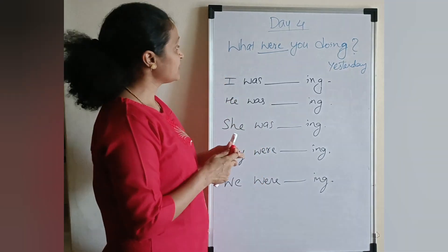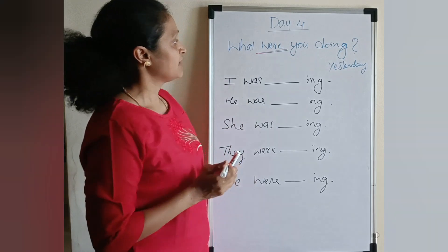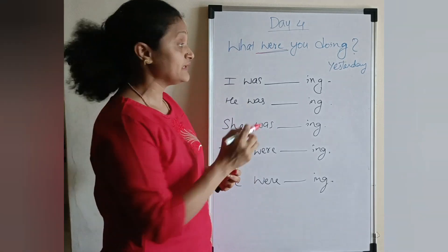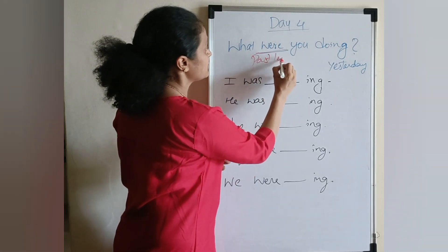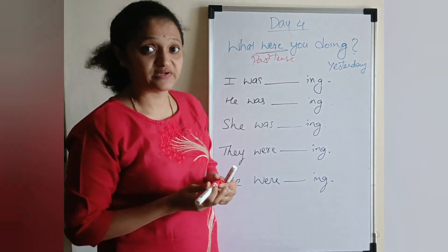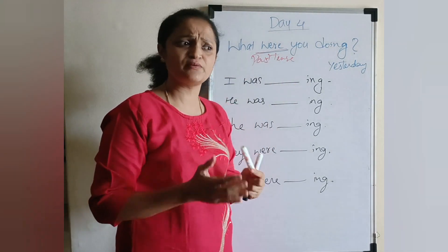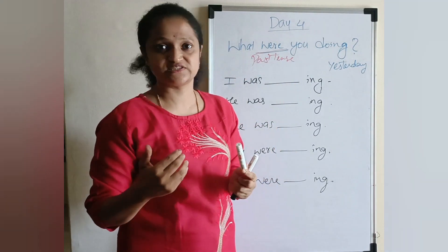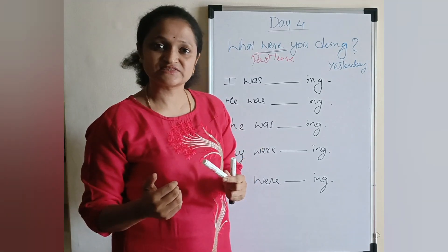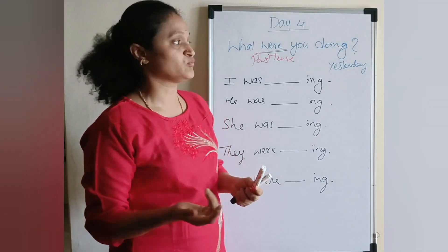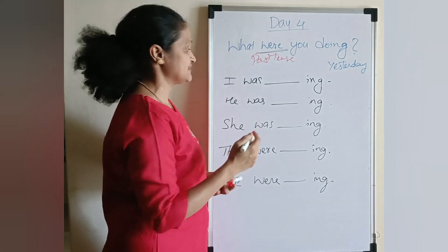So today we are talking about what were you doing yesterday. 'Were' is the past tense. When we say what are you doing, 'are' is the present tense. We are going to give our answers in past tense. Where were you — that is past tense.